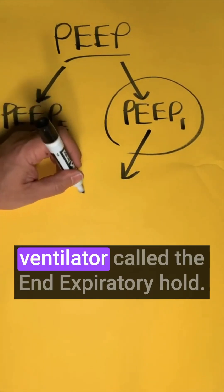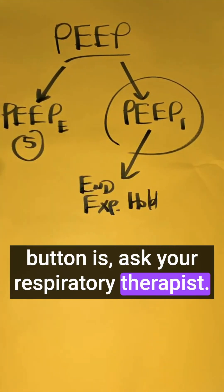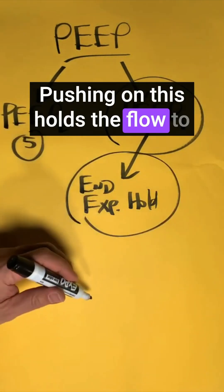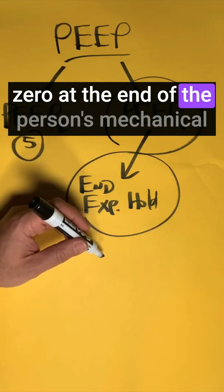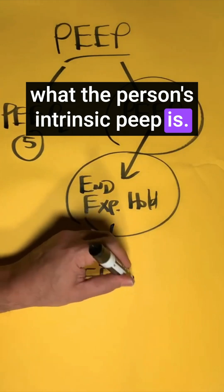You have to push a button on the ventilator called the end expiratory hold. And if you don't know where this button is, ask your respiratory therapist. Pushing on this holds the flow to zero at the end of the person's mechanical breath, and this is going to figure out what the person's intrinsic PEEP is.